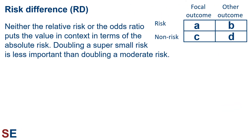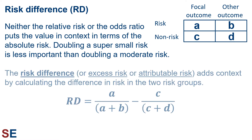Let's look at a third statistic, the risk difference, often abbreviated as RD, before we talk about confidence intervals. Neither the relative risk nor the odds ratio puts the value in context in terms of the absolute risk. Doubling a super small risk is less important than doubling a moderate risk. If your chance of dying from a disease if you perform a certain behavior goes from a baseline of 5% to 10%, that's much more important than if the risk goes from one in a million to two in a million, but both of these cases have relative risks of two. The risk difference, also known as the excess risk or attributable risk, adds context by calculating the difference in risk in the two risk groups.